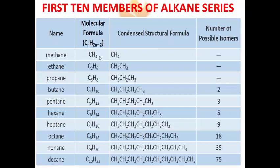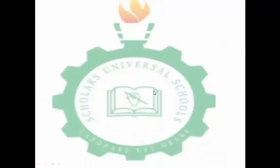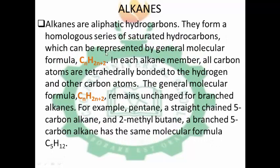These are the first 10 members. We have methane, which has one carbon atom. This is the molecular formula, this is the condensed structural formula, and this is the number of possible isomers. Ethane is the second member with two carbon atoms. Alkanes are aliphatic hydrocarbons — that means they belong to the straight chain hydrocarbons. They form a homologous series of saturated hydrocarbons which can be represented by a general formula CnH2n+2.